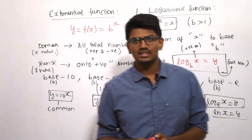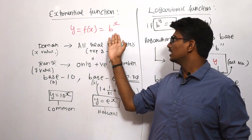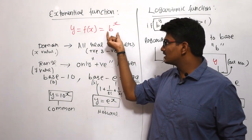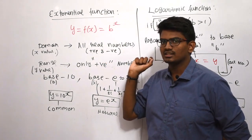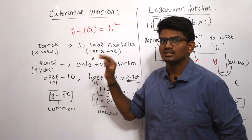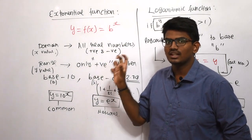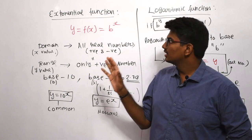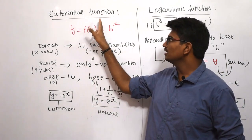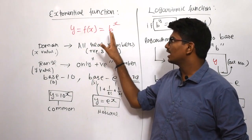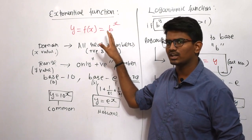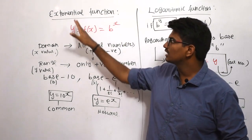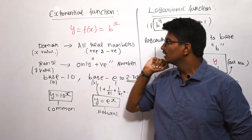There is a common misconception that if instead of b, e was there — that is y is equal to e power x — that is the only exponential function. That is what most students think, but that is not right. It is clearly stated that the exponential function may have any base: 10, 2, 3, 4, 5, whatever it is — some value to the power of x — and we will call that an exponential function.